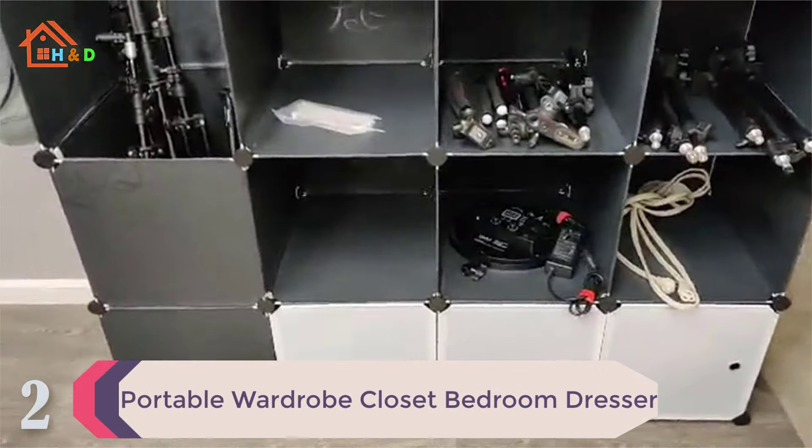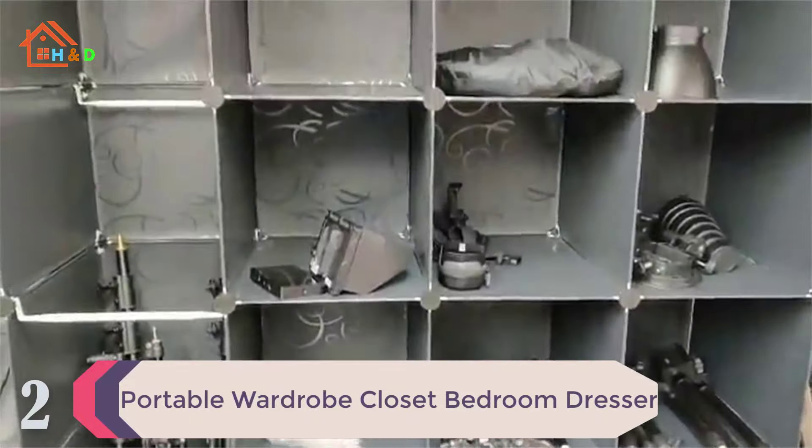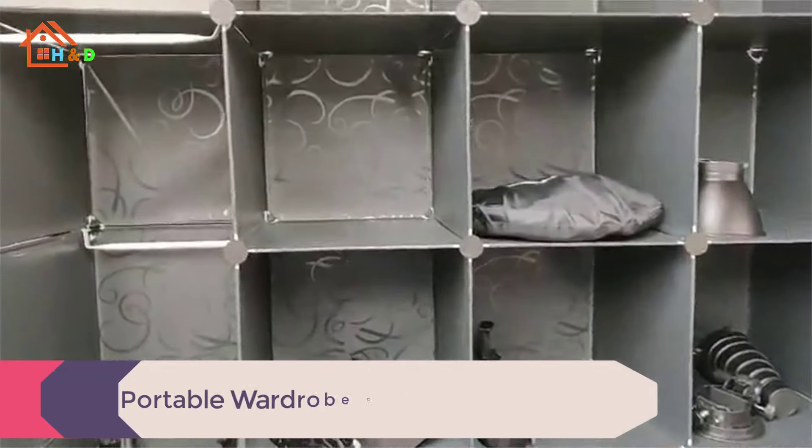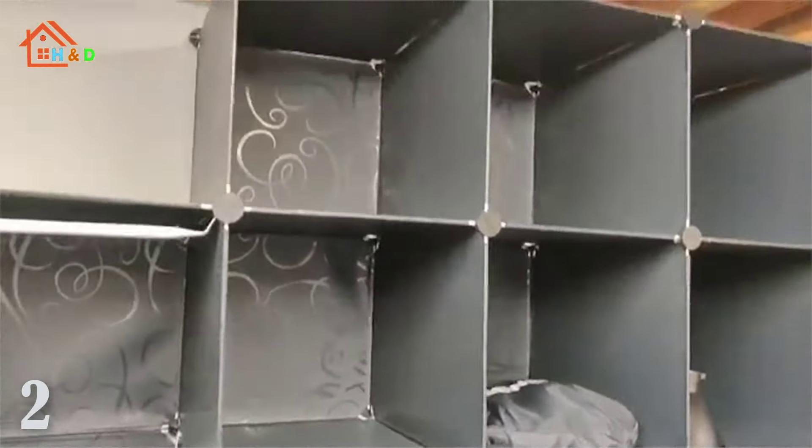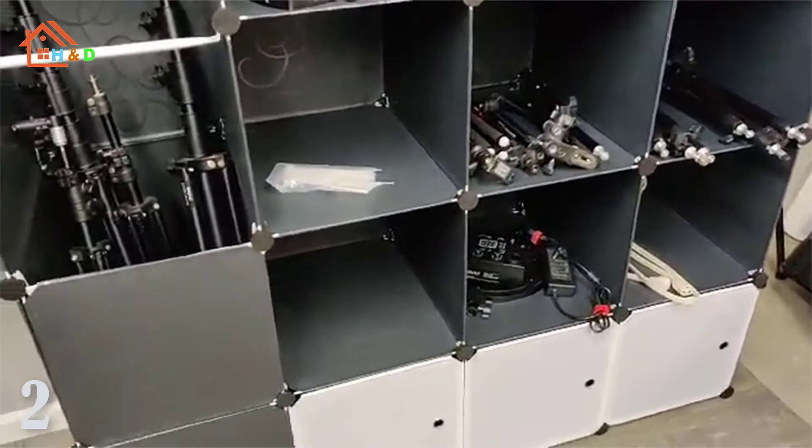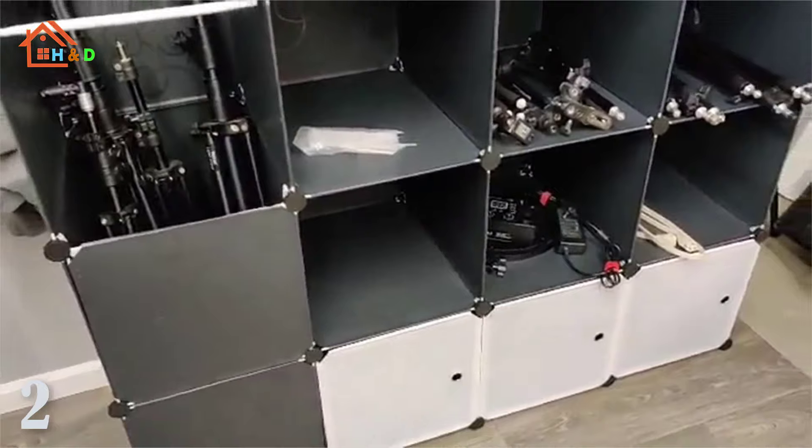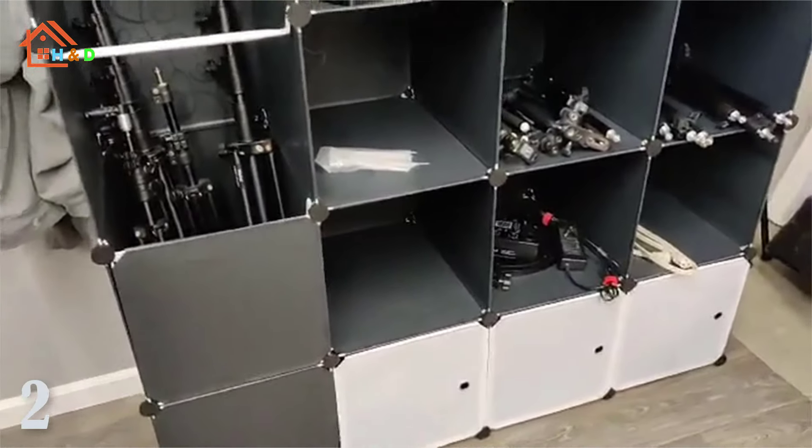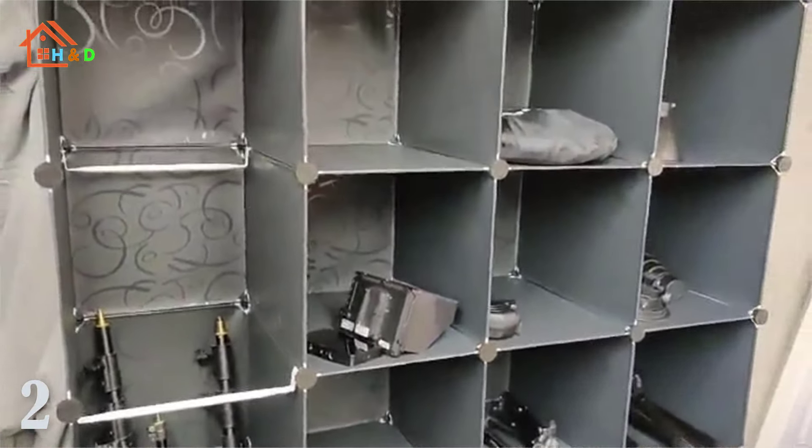At number 2 we have portable wardrobe closet bedroom dresser. Each cube is perfect for 13 inches by 13 cube bins or 7 to 14 folded clothes. Each hanging section fits about 7 jackets or dresses. The 5 hooks provide extra hanging positions.